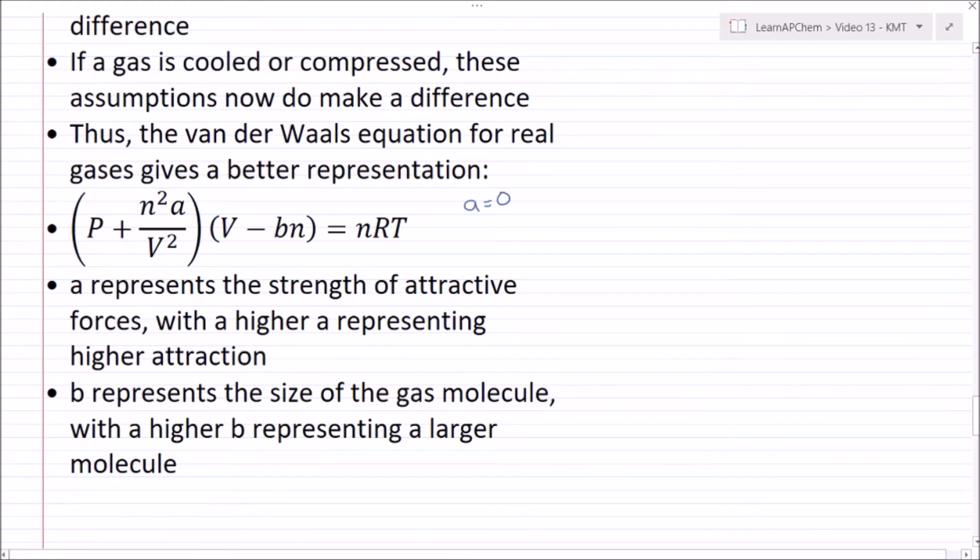B represents the size of the gas molecules with a higher B representing a larger molecule. Now note that if I plug in a equals 0 and B equals 0, I get the ideal gas law where I have no attractive forces and no volume.